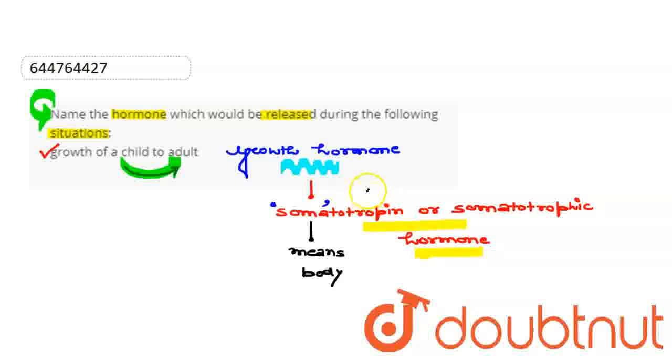The word soma means body and trophin means nourishment. So, this hormone regulates growth by promoting protein anabolism, protein synthesis, intestinal absorption of calcium and the conservation of glucose.